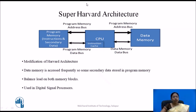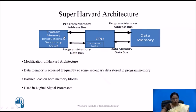The Super Harvard architecture is a modification of Harvard architecture. It also has two memory blocks with separate address and data buses for program memory and data memory. The modification is that, since data is accessed frequently, some secondary data is stored in program memory to balance both memory blocks. This architecture is used in digital signal processors.